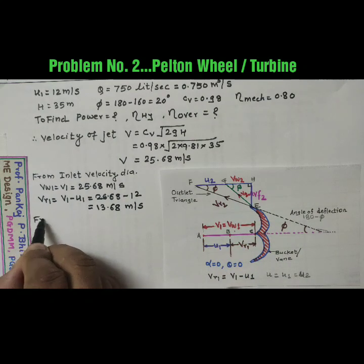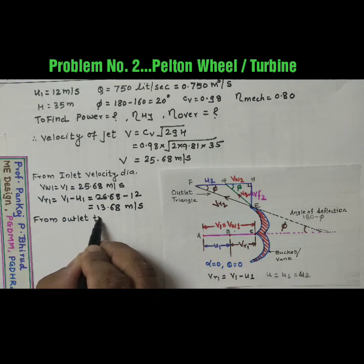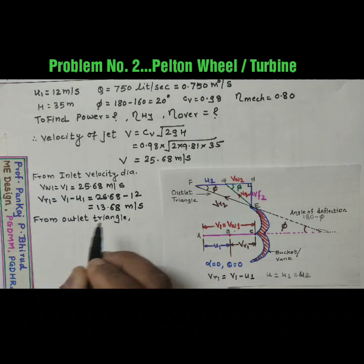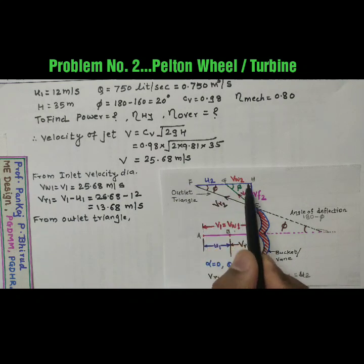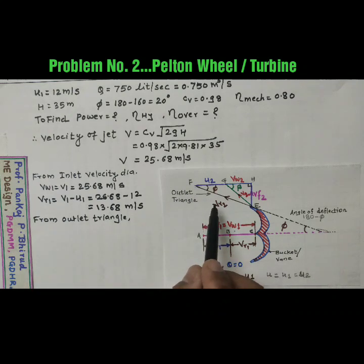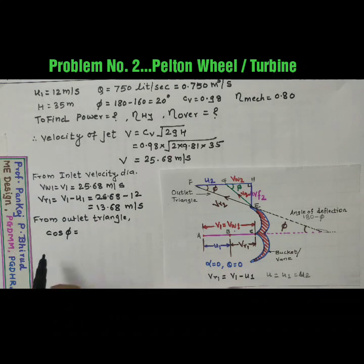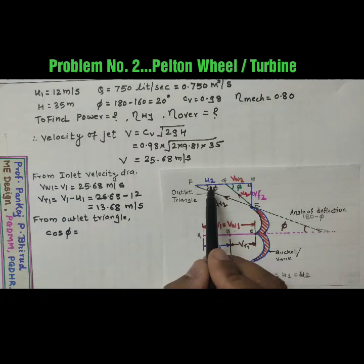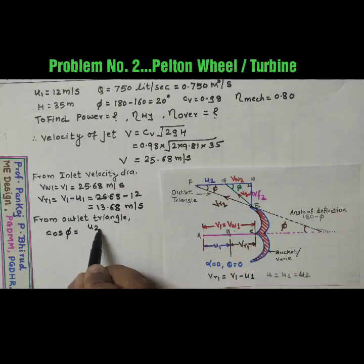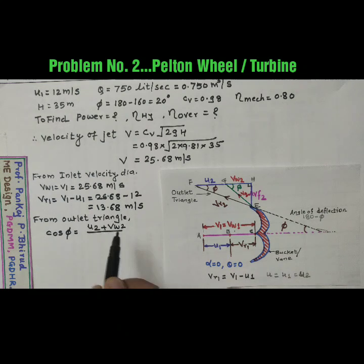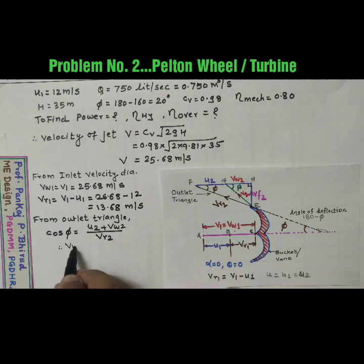Now from outlet triangle, consider this EHF triangle. We will get cos phi equal to U2 plus Vw2 upon hypotenuse that is Vr2. So we will get Vw2.